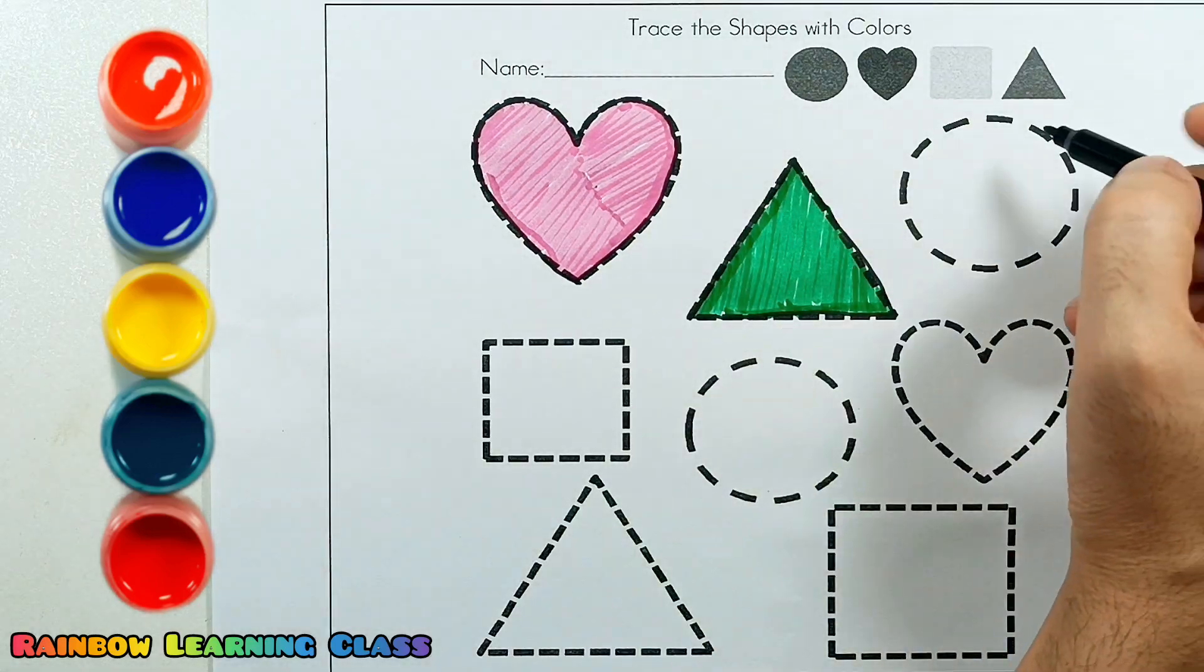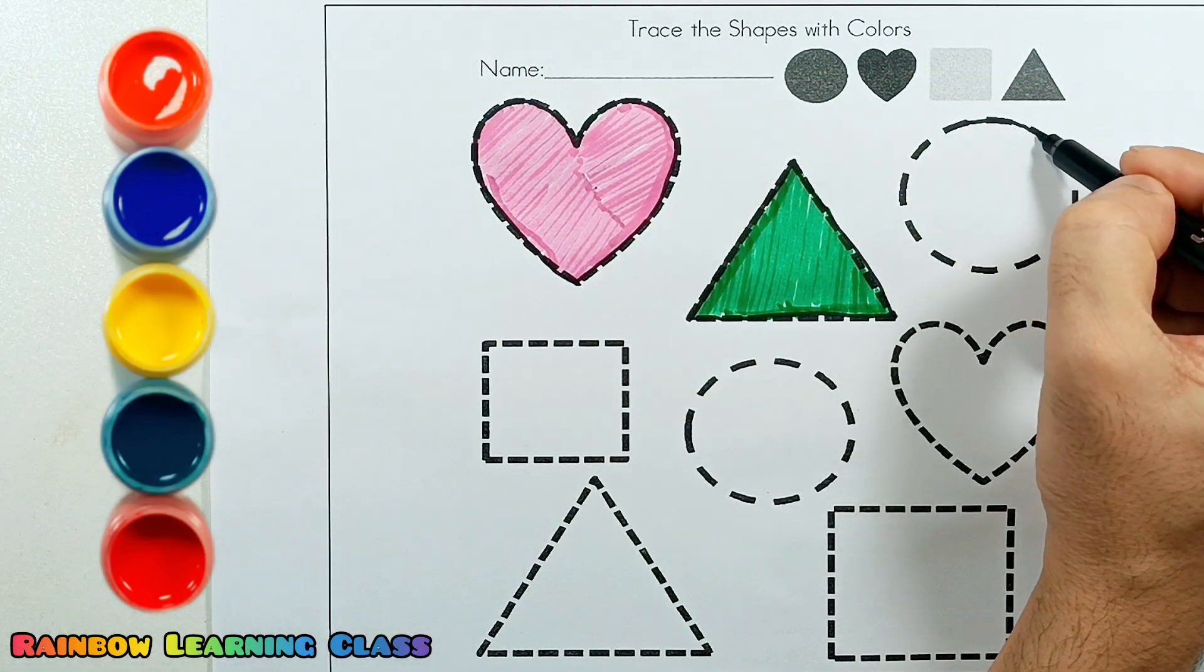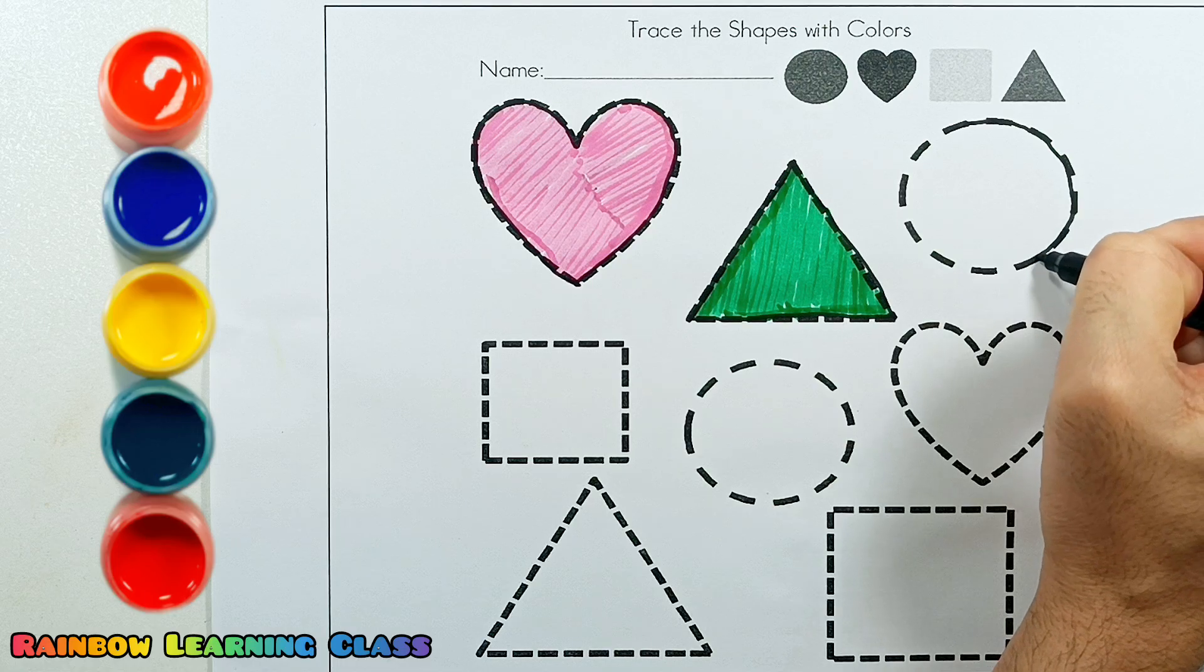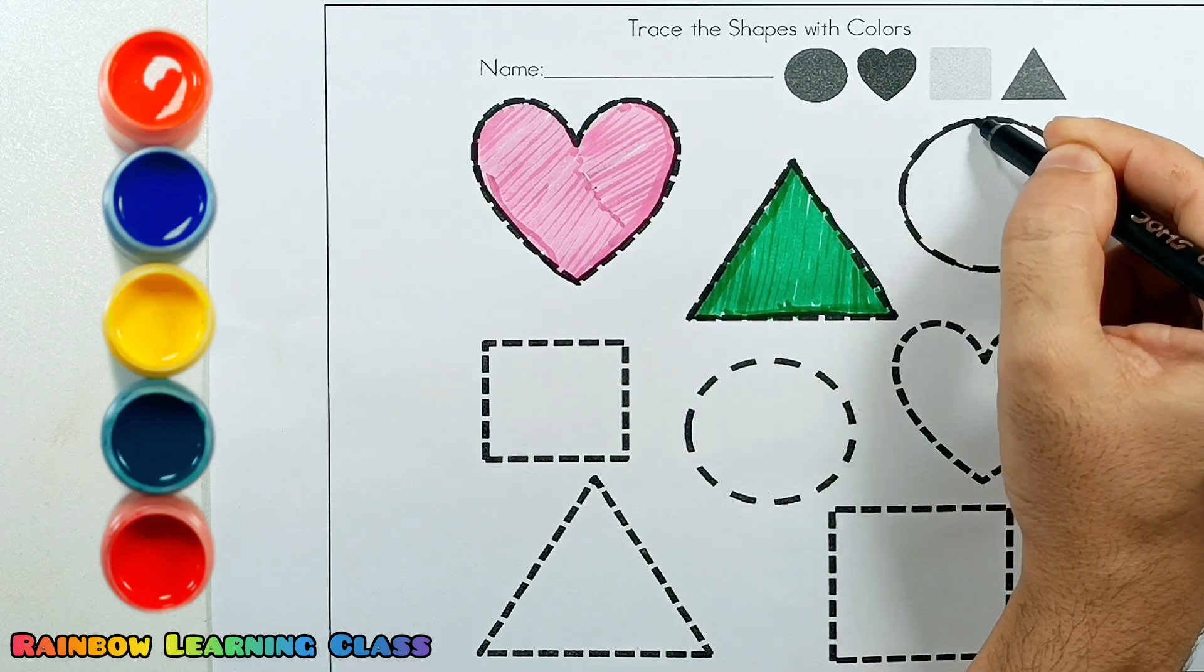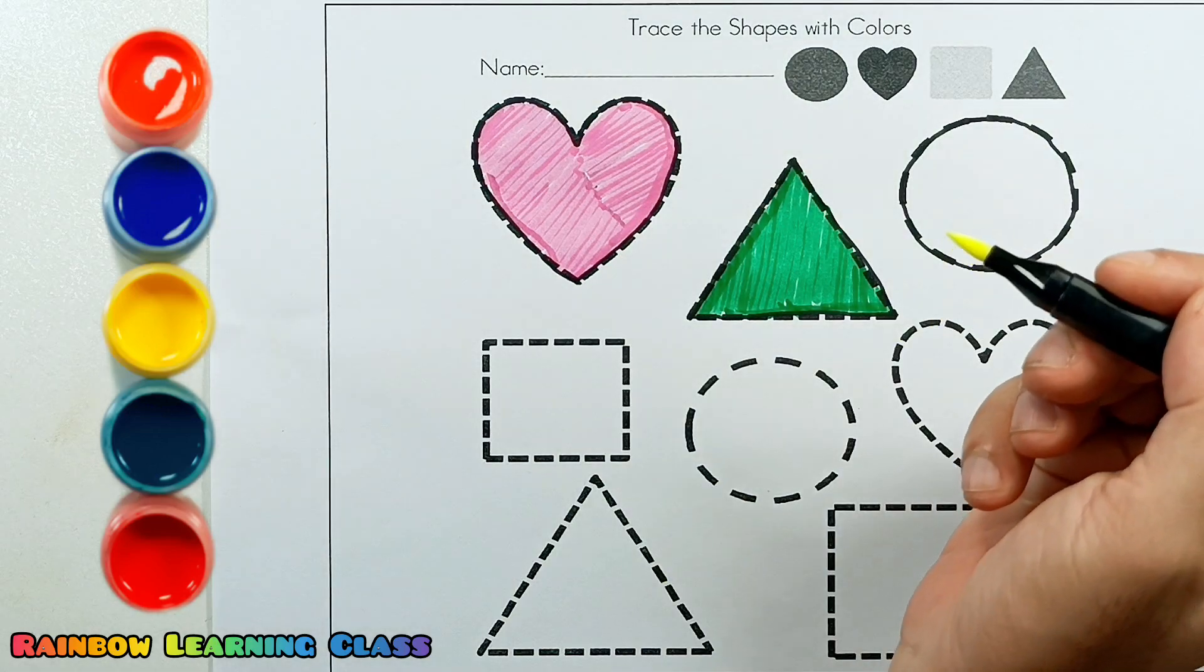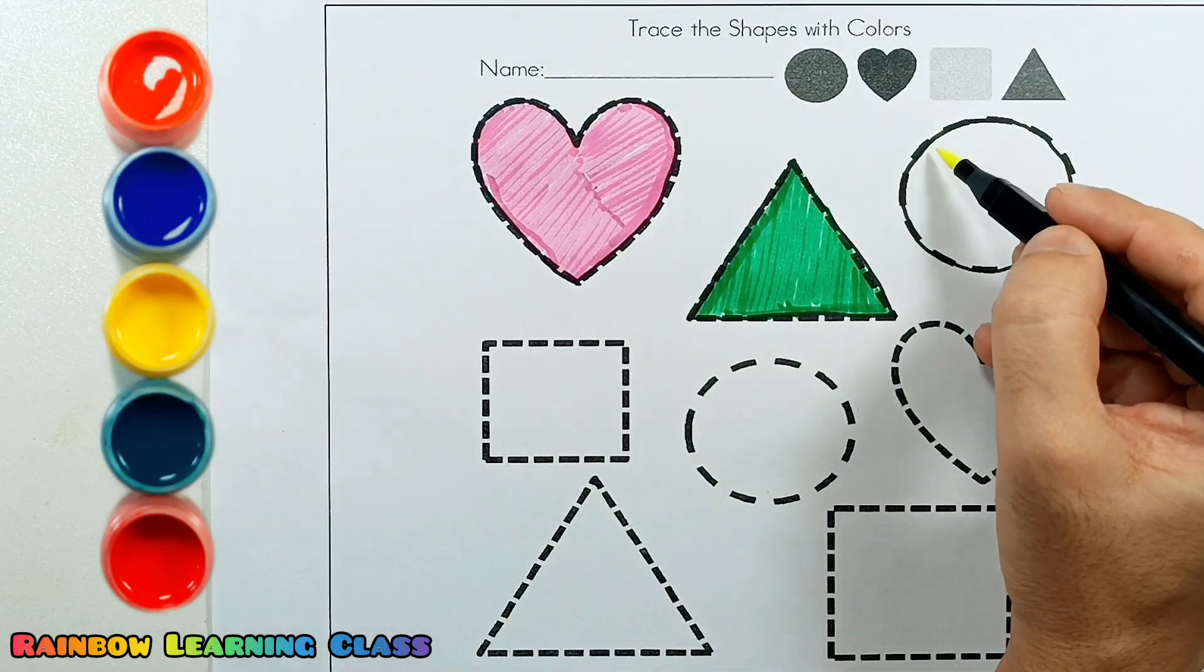Green color. Next shape: circle. Yellow color. Circle is yellow color.